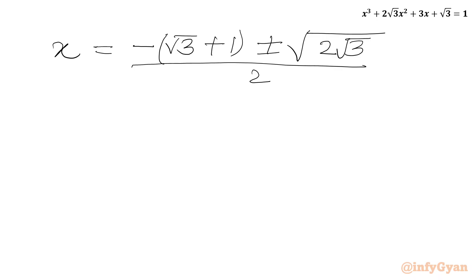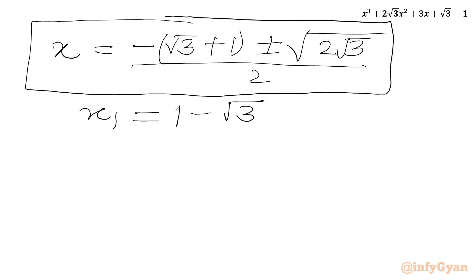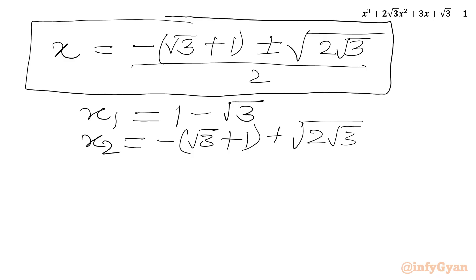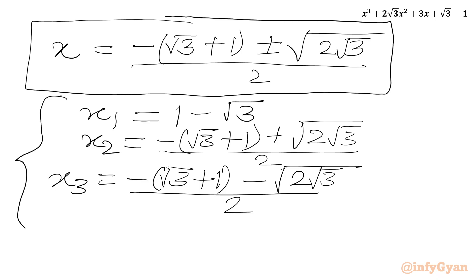We have two solutions from the quadratic, giving us three real solutions in total: x₁ = 1 − √3, x₂ = [−(√3 + 1) + √(2√3)] / 2, and x₃ = [−(√3 + 1) − √(2√3)] / 2.